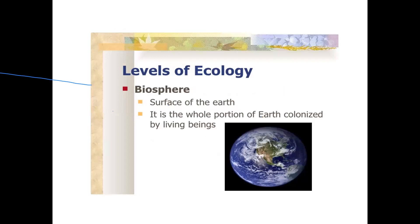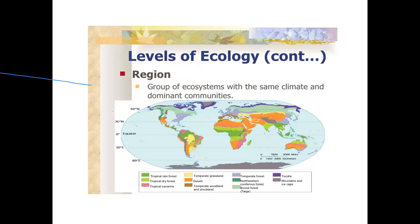The biosphere is the surface of the earth — the whole portion of the earth colonized by living organisms. 'Bio' means living and 'sphere' means surface of the earth. A biome is a group of ecosystems with the same climate and dominant community. Examples of biomes include tropical rainforest, tropical dry forest, tropical savannah, and desert.